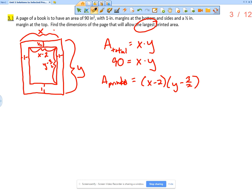And so we want to maximize the area of the printed section. We're going to solve the first equation for X or Y and then substitute into the second equation so we have an area function of either X or Y.